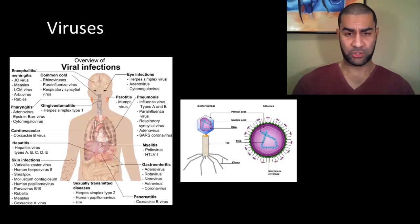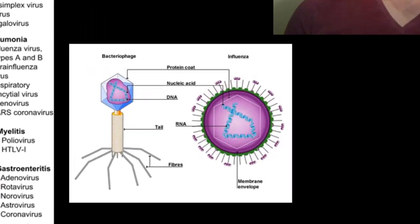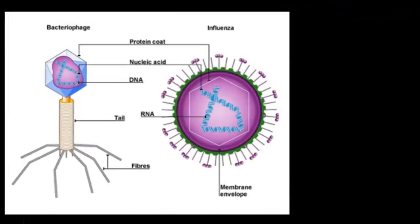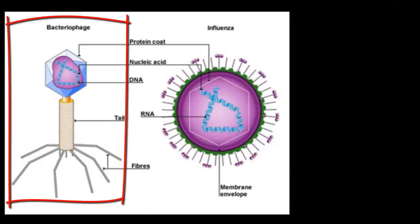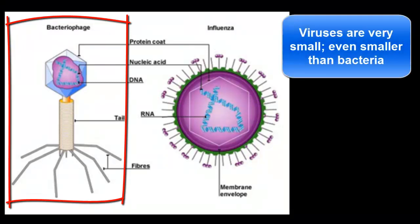We'll typically split viruses into two categories - what we consider bacteriophages, which are viruses that attack bacteria, and viruses that attack human cells. The fact that a virus is small enough to get into a bacteria tells you something about the size of a virus - it's definitely even smaller than bacteria. So we're talking about things that are very, very small when we relate to viruses. The one on the right is probably the most common example of the size and structure of a virus that would typically attack the human body.